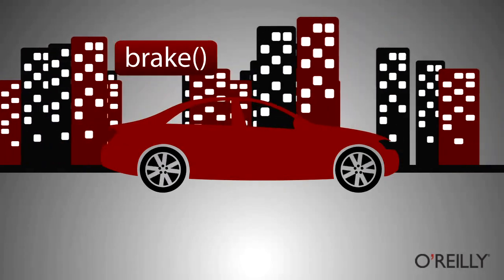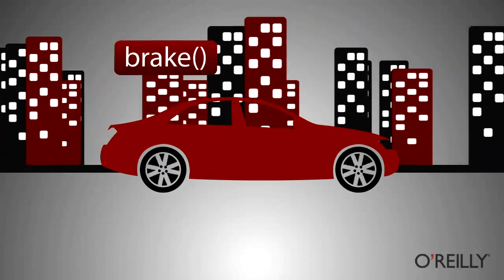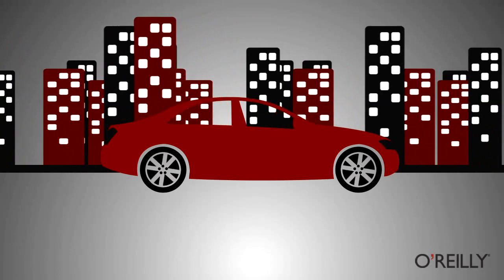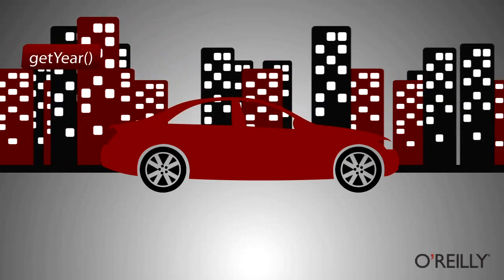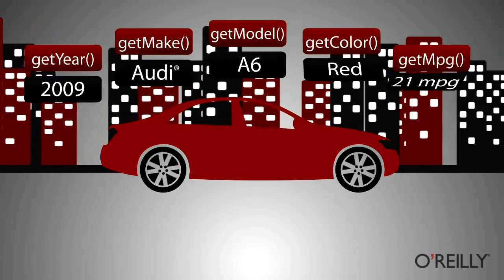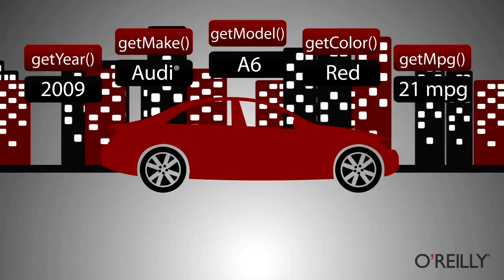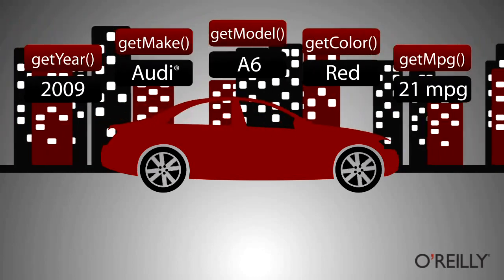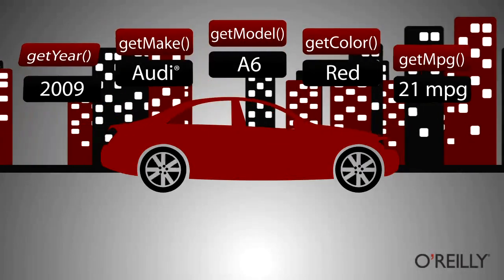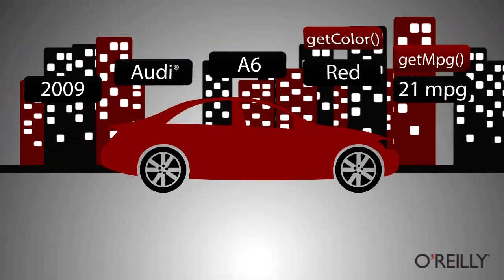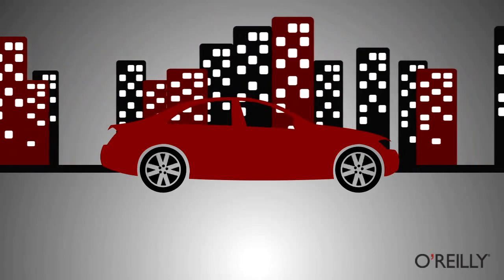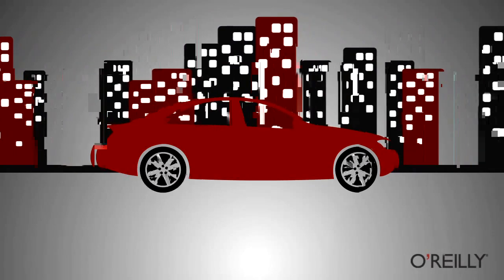We can also ask our car about itself. We can say, what kind of car are you? What is your make? What is your model? What is your year? And the car can tell us those things about itself. And that is the essence of what an object is.